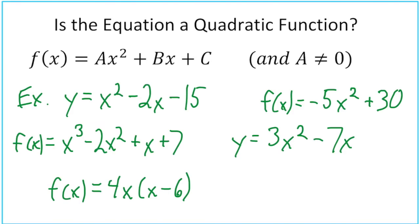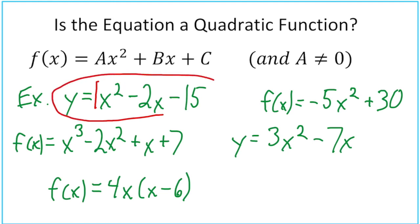Here are some examples. Some of these qualify as quadratic functions, and some do not. The first one: y = x² - 2x - 15. Remember, the a value on that could simply be a 1, so that follows our pattern — that is quadratic.